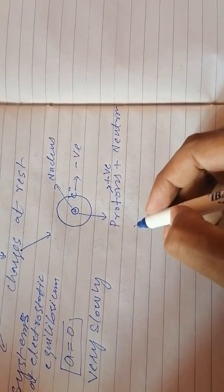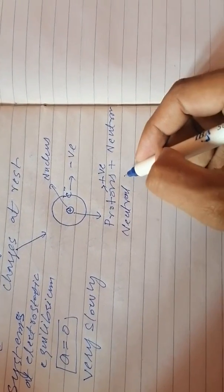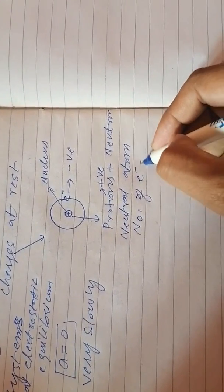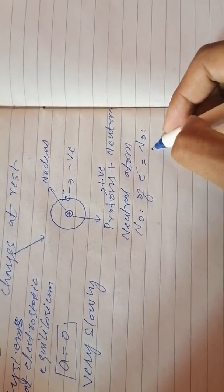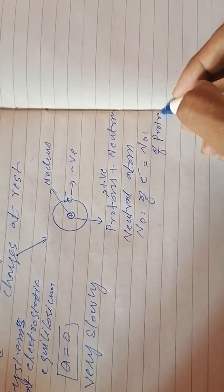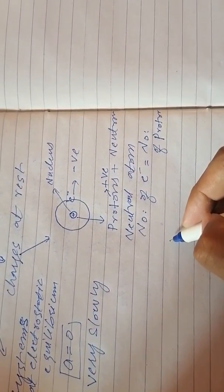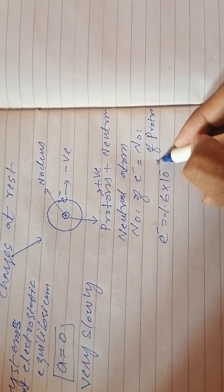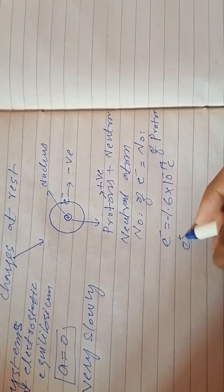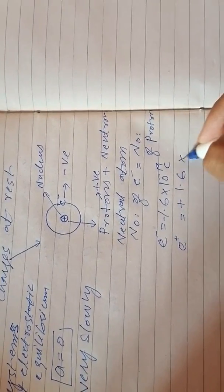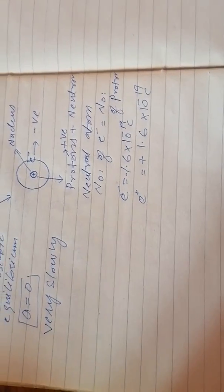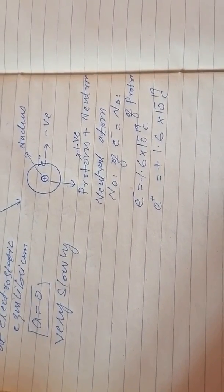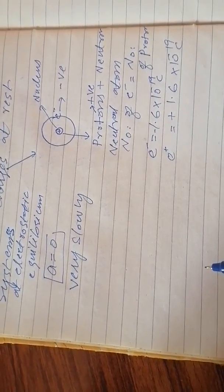A neutral atom means the number of electrons equals the number of protons. The charge of an electron is negative 1.6 × 10⁻¹⁹ coulombs, and the charge of a proton is positive 1.6 × 10⁻¹⁹ coulombs. Both particles carry the same magnitude of charge, so a neutral atom has no net charge. But how do we charge an object?